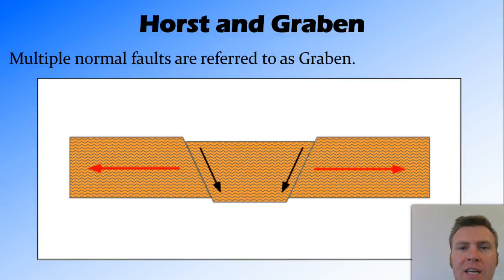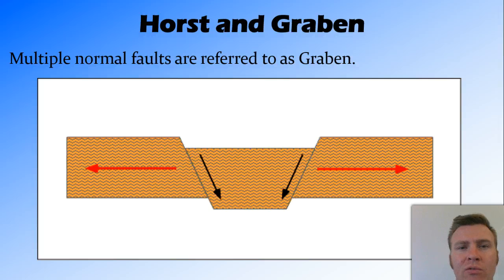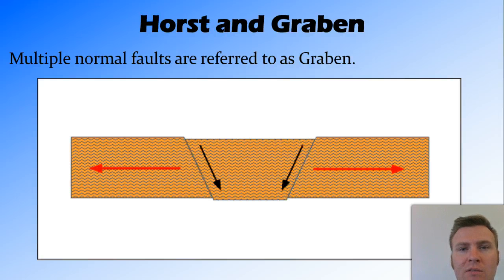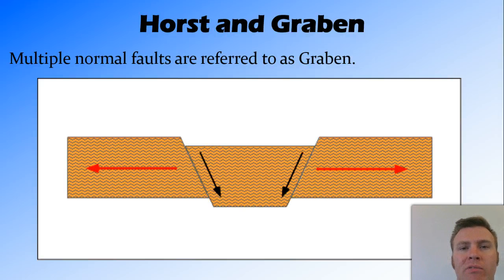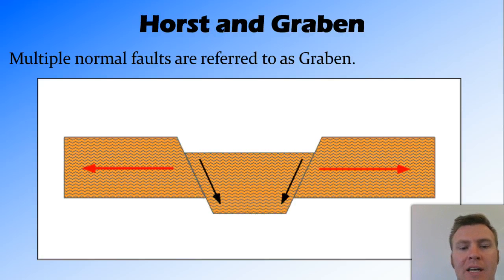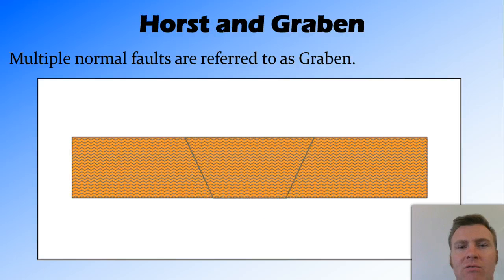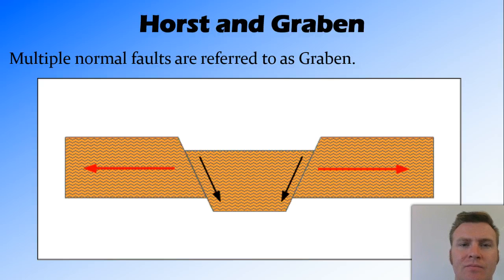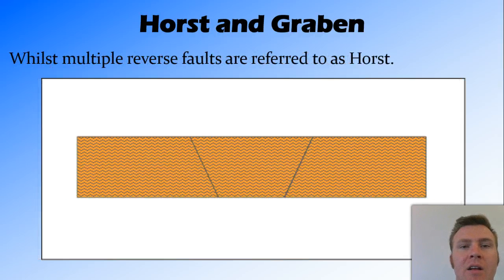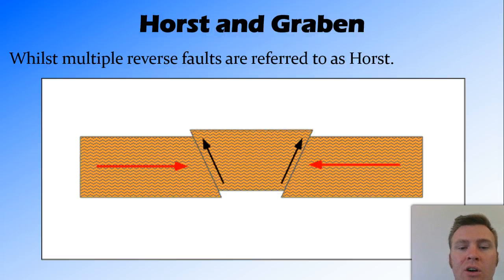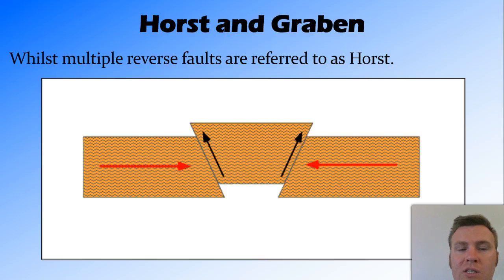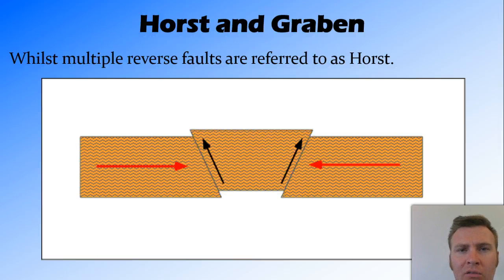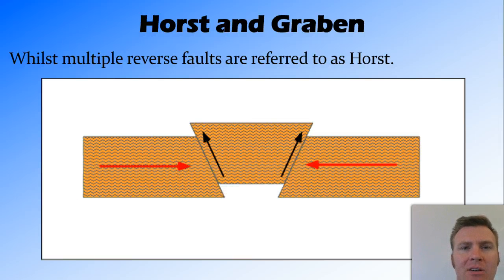There are two particular types of faults where you can get multiple faults occurring together. If there are multiple normal faults caused by tension, it's referred to as graben. With graben, you get a couple of faults and a section of rock drops down below the rest of the strata. The opposite of this is a horst, which occurs from multiple reverse faults where a section of rock rises up above the rest of the strata — sticking up out of the ground.